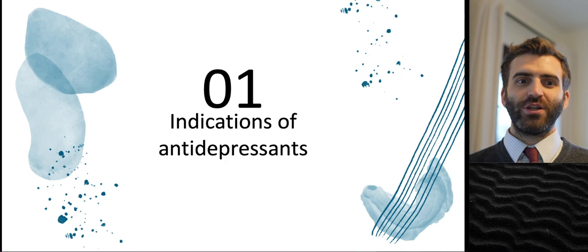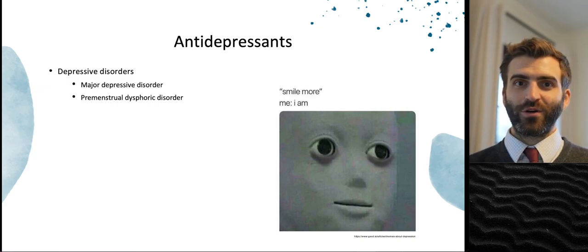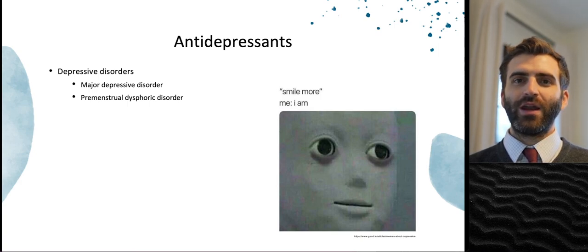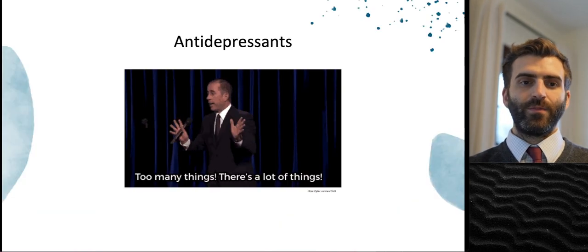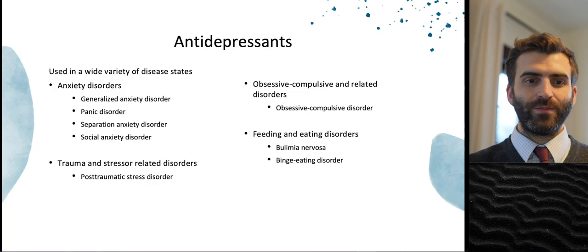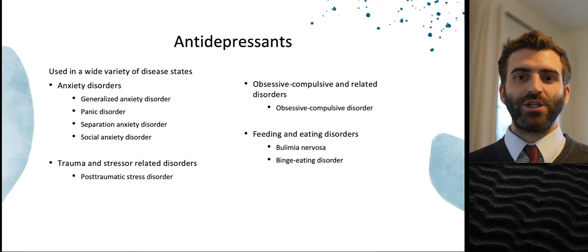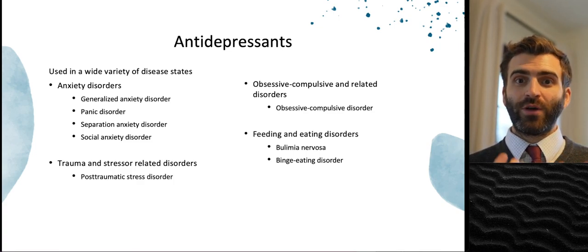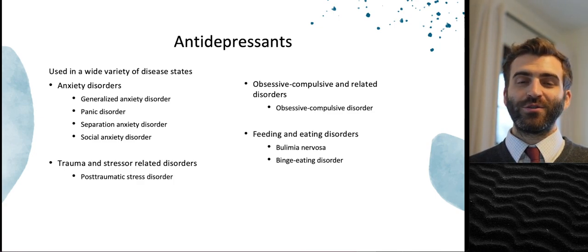Let's go into the first section: indications of antidepressants. As the name implies, antidepressants are used in the treatment of depressive disorders. In the DSM-5, the most commonly heard subcategory is major depressive disorder. A key question is: what else can antidepressants be used for? The name is tricky for patients because these are called antidepressants, but we use them for a lot more than just depression. They're actually first-line for a lot of anxiety disorders.